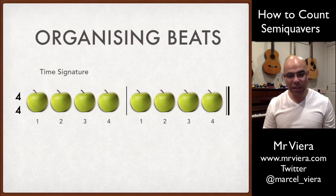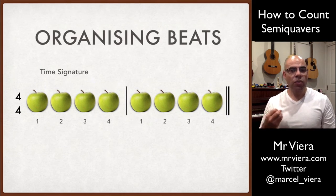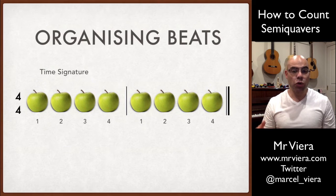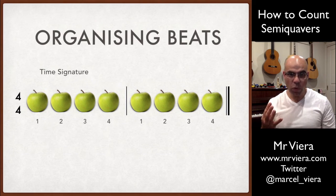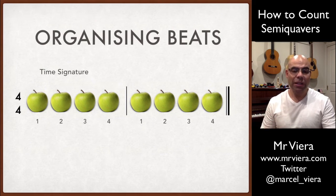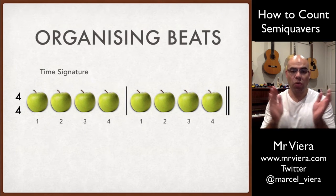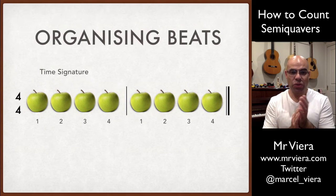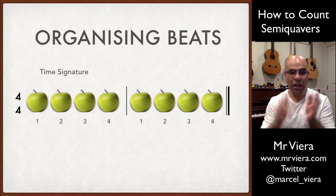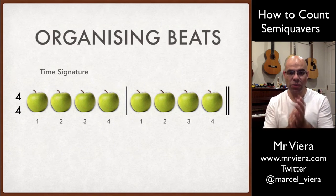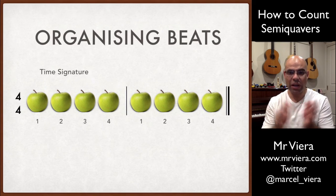The most common, perhaps by far — especially in our modern pop music that we tend to listen to — we tend to have groups of four. So in this example we've got: one, two, three, four, one, two, three, four.